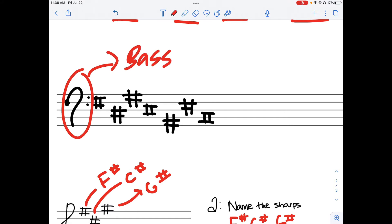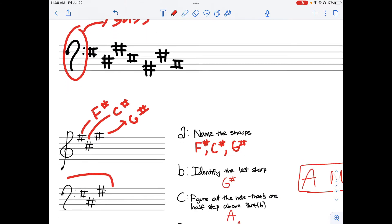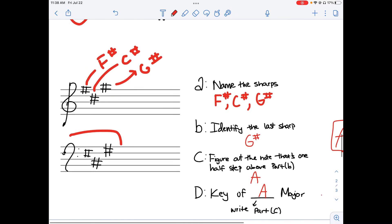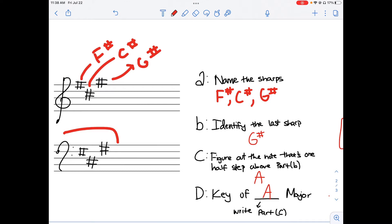So for our first example, here we have three sharps: F sharp, C sharp, and G sharp. Your first step is to name the sharps, so we have done that here.